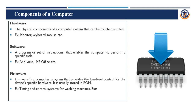What are the components of the computer? There are mainly three components: first is hardware, then software, then firmware. The hardware components are things we can touch and feel — for example, monitor, keyboard, and mouse. The software components are a set of instructions that enable the computer to perform specific tasks.